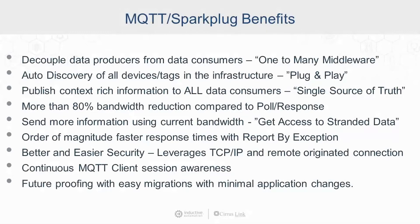Using MQTT and Sparkplug, what are the benefits? First, we've decoupled data producers from data consumers, creating a one-to-many architecture with message-oriented middleware. We have auto-discovery of all devices and tags, resulting in plug-and-play architectures. We're publishing context-rich data to all consumers — a single source of truth for one process variable tag published to one, two, ten, or a hundred data consumers. More than 80% bandwidth reduction compared to poll-response means we can send more information using currently available bandwidth, giving access to 80–90% more data that used to be stranded. We also get an order of magnitude faster response times with report-by-exception.